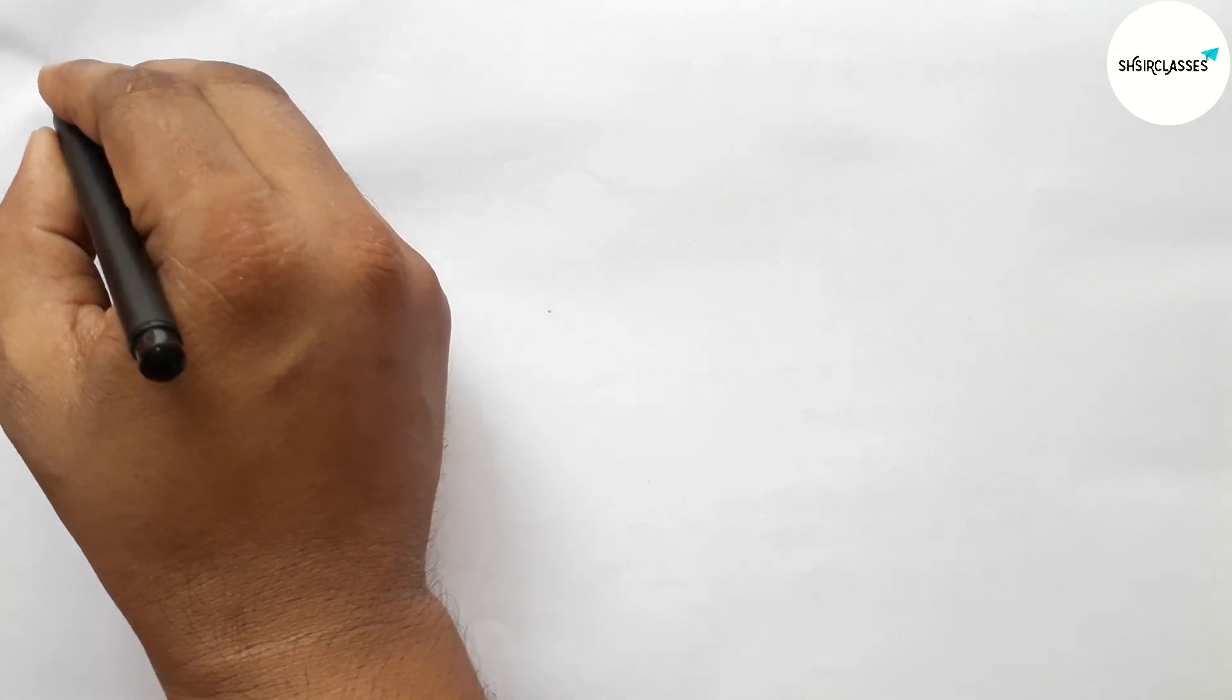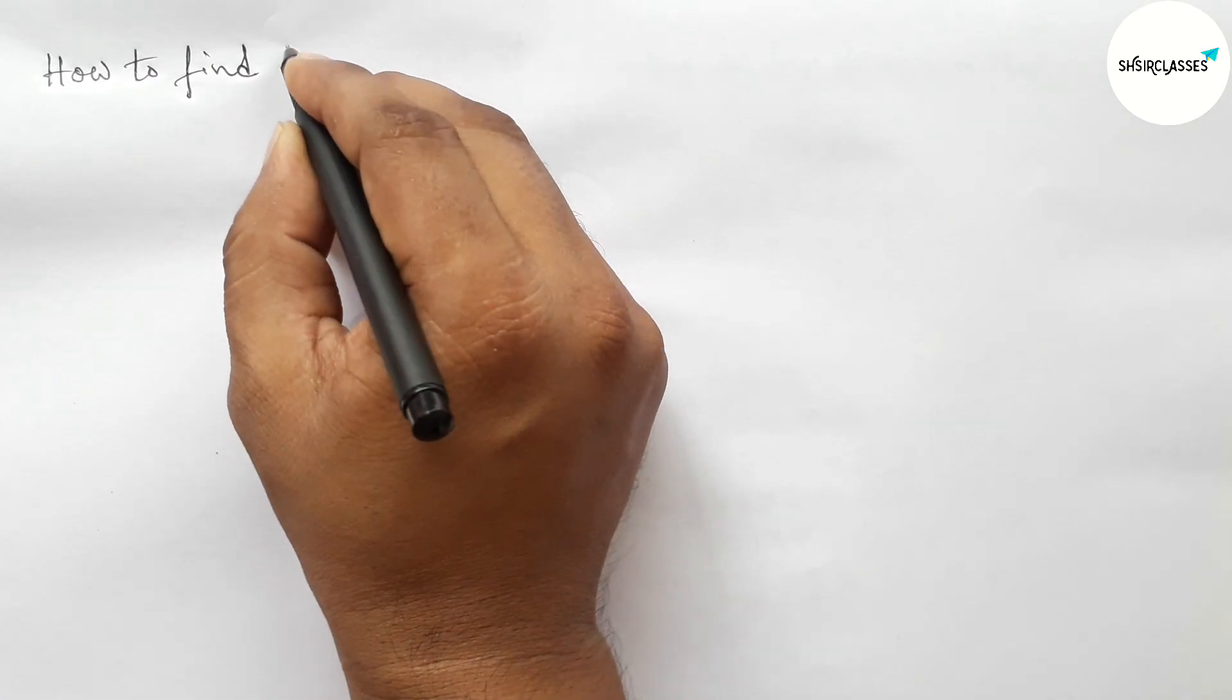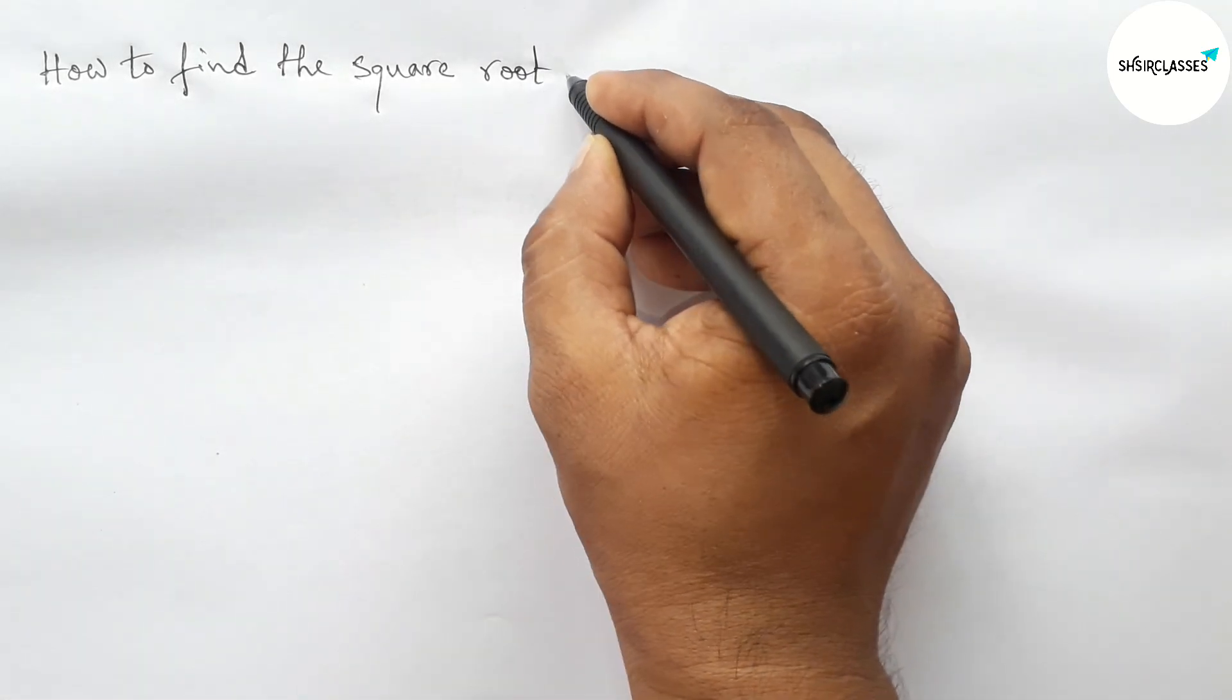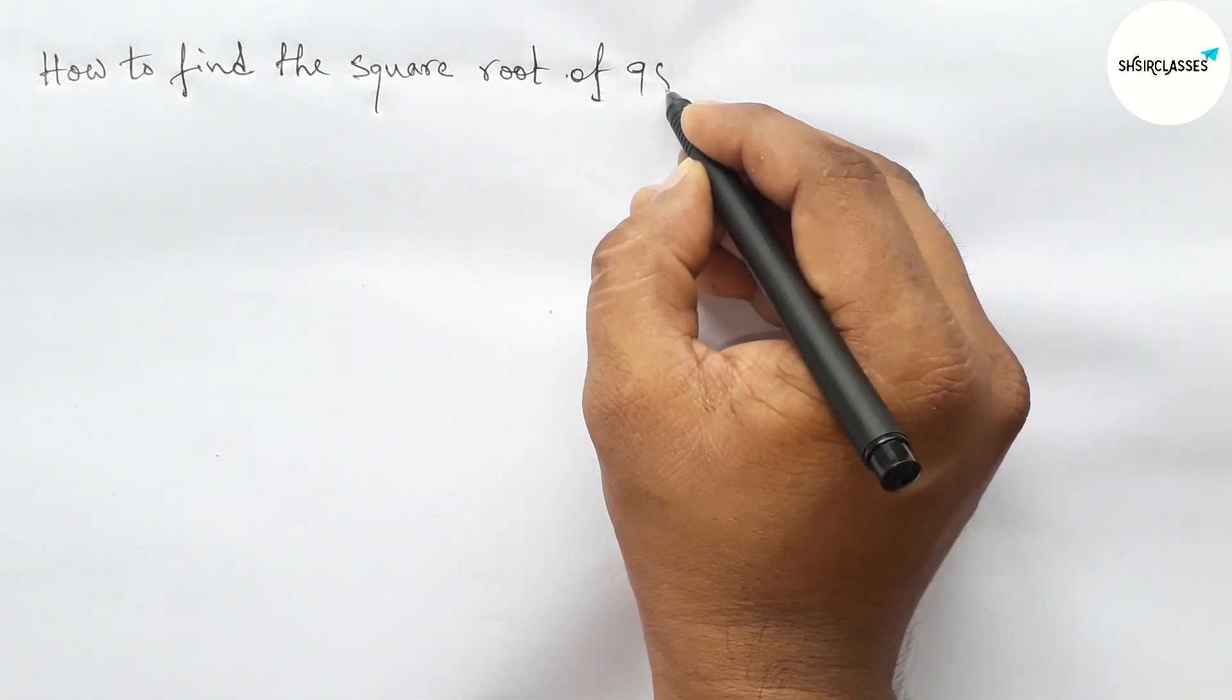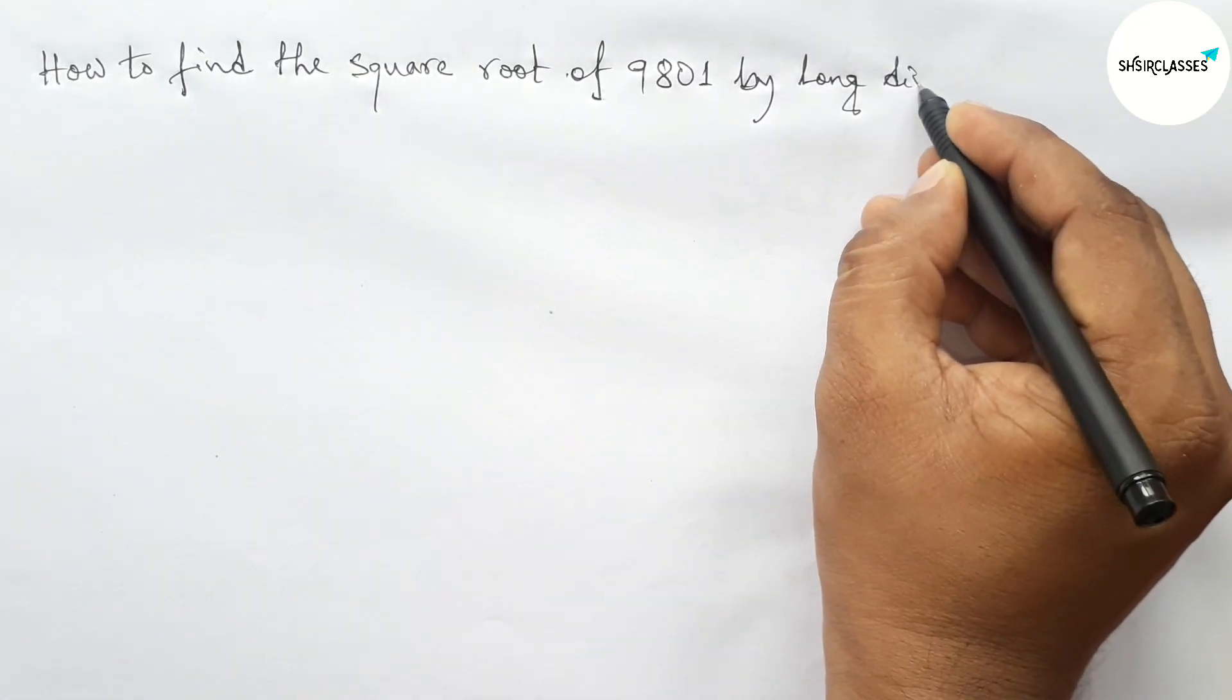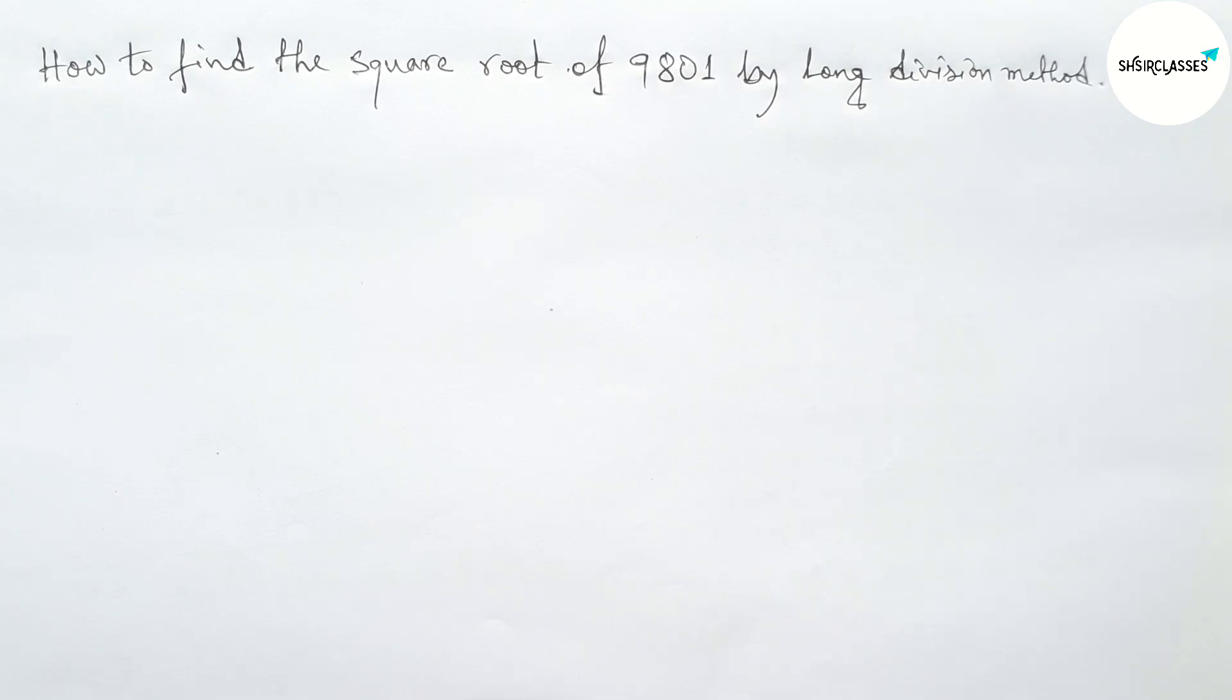Hi everyone, welcome to essay share classes. Today in this video, how to find the square root of 9801 by using long division method in easy way. So please watch the video till the end. So let's start the video.